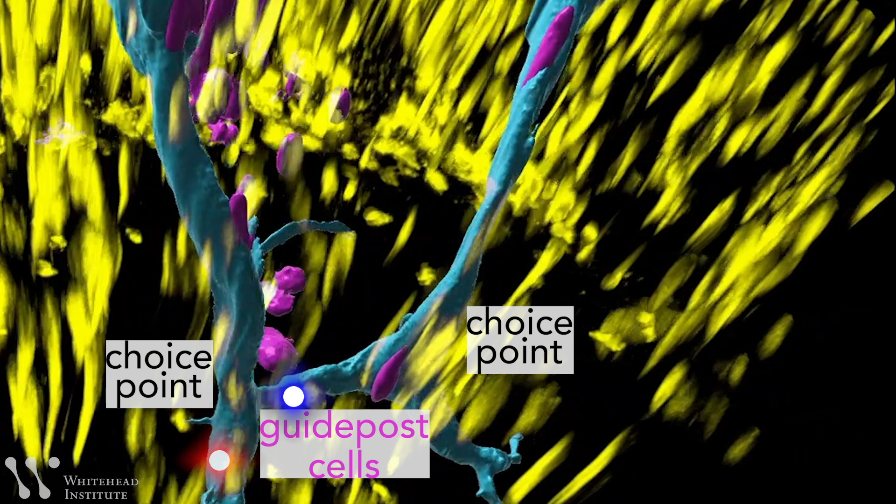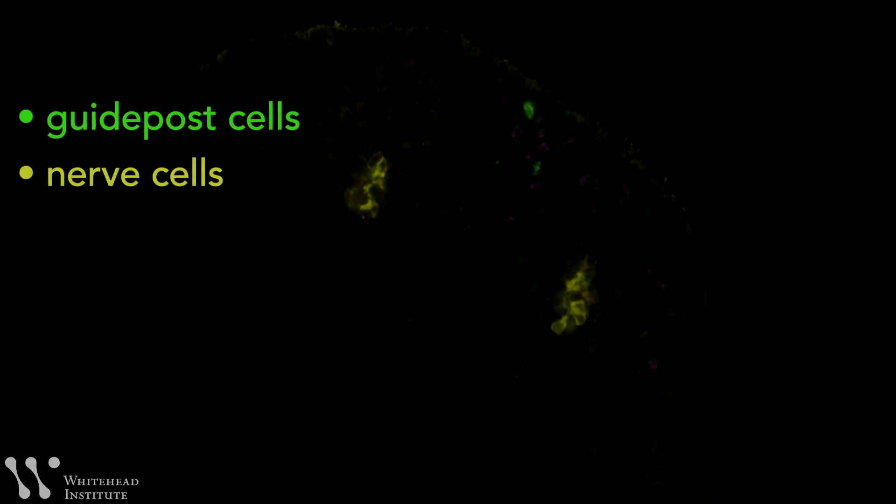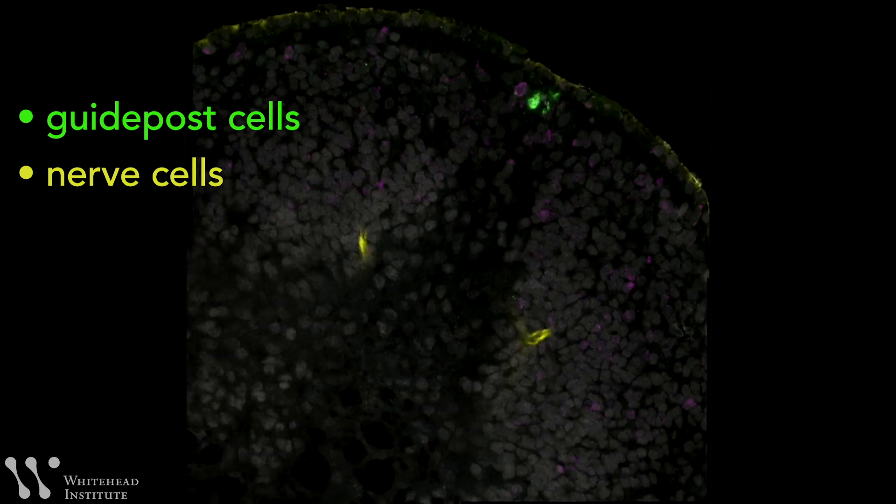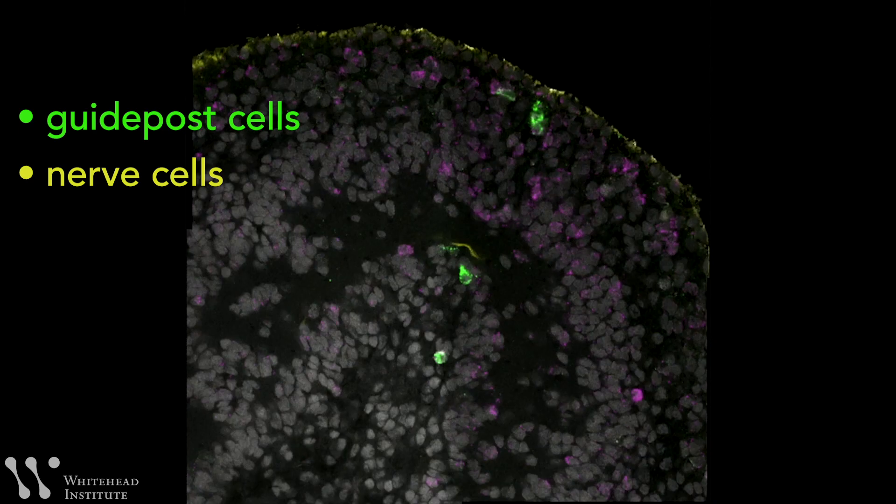Planarian muscle is necessary for structure and movement, but also provides other types of information essential for the animal to regenerate. With the cues from the guidepost muscle cells, planarians are able to rebuild new eyes and wire them to a functional brain in just a few days.